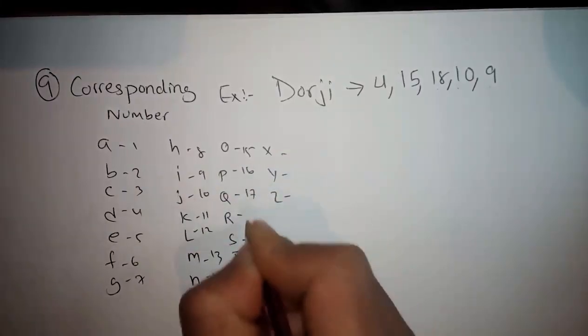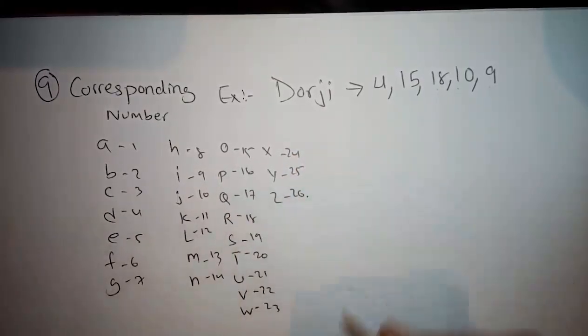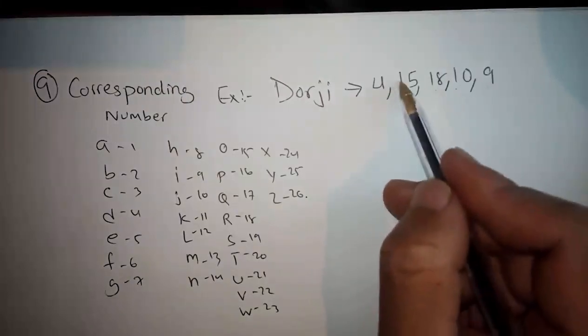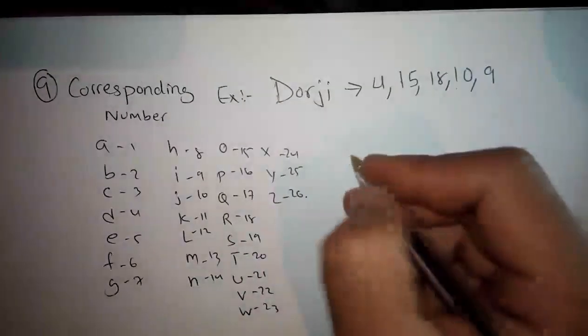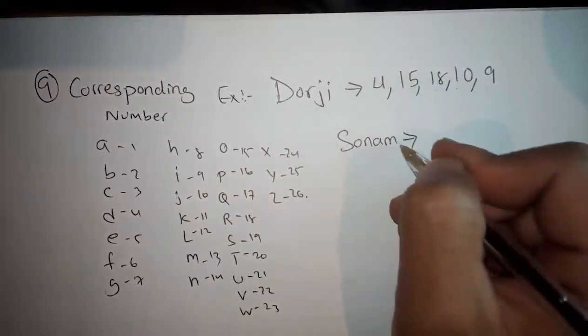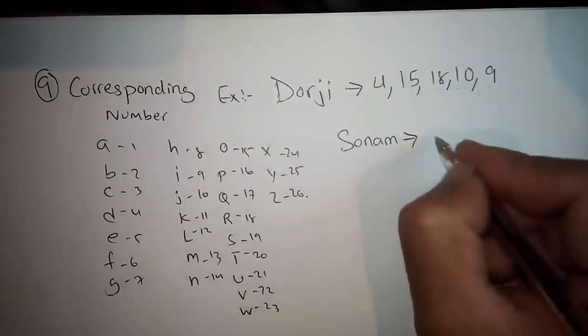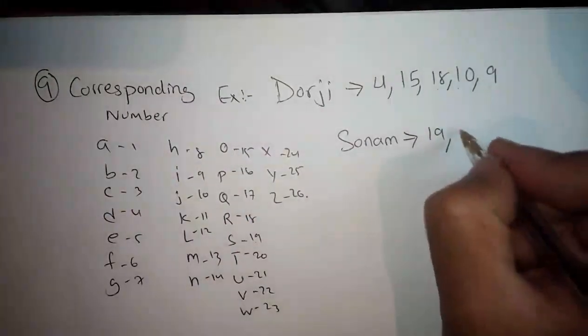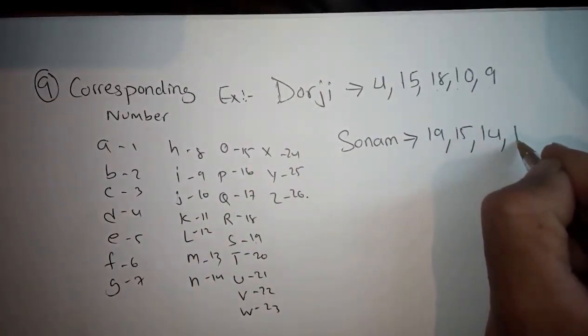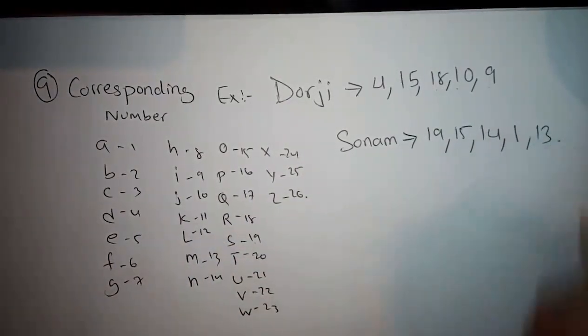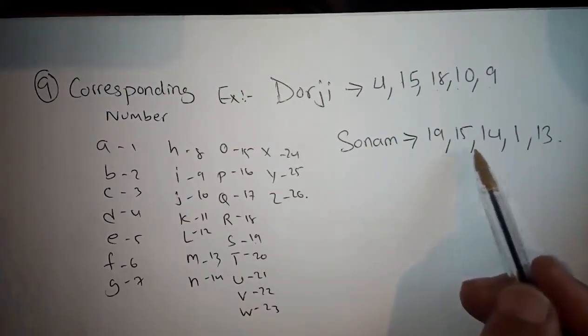The corresponding numbers are one, two, three, four, five, six, seven, eight, nine, ten, eleven, twelve, thirteen, fourteen, fifteen, sixteen, seventeen, eighteen, nineteen, twenty, twenty-one, twenty-two, twenty-three, twenty-four, twenty-five, and twenty-six. When they ask how will Sonam be coded, S is nineteen, O is fifteen, N is fourteen, A is one, M is thirteen. So Sonam will be coded as 15, 19, 15, 14, 1, and 13.